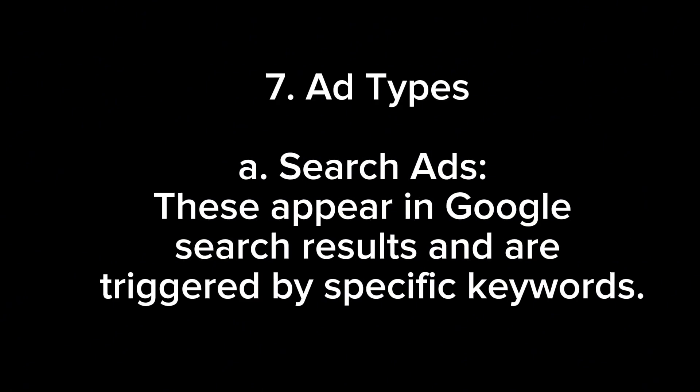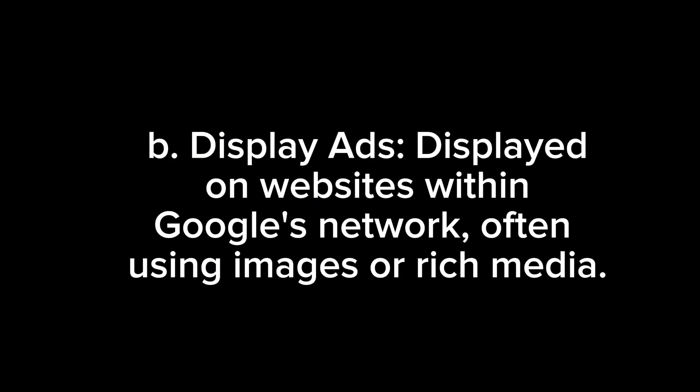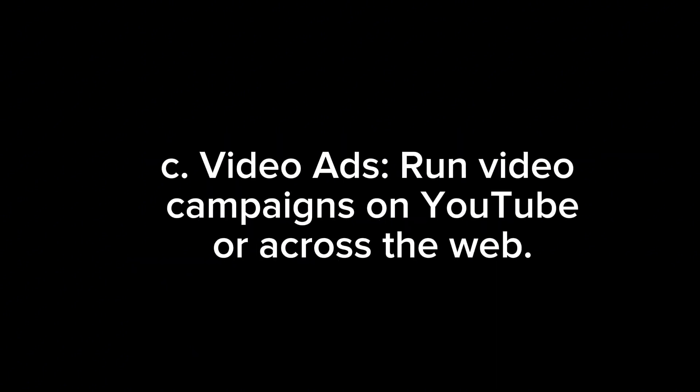7. Ad Types. A. Search Ads: These appear in Google search results and are triggered by specific keywords. B. Display Ads: Displayed on websites within Google's network, often using images or rich media. C. Video Ads: Run video campaigns on YouTube or across the web.